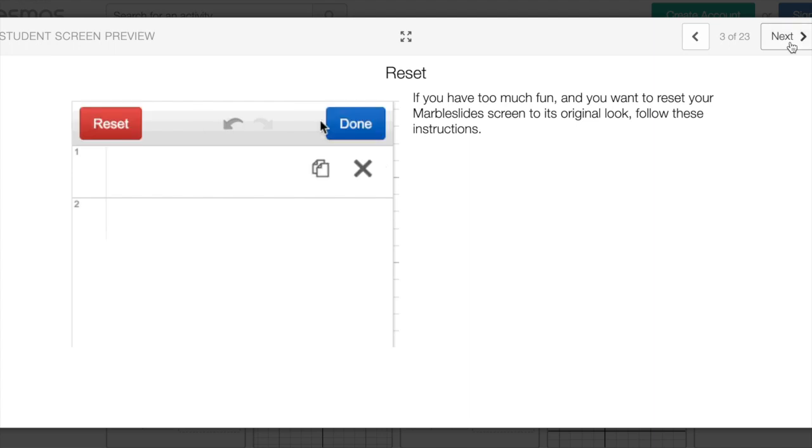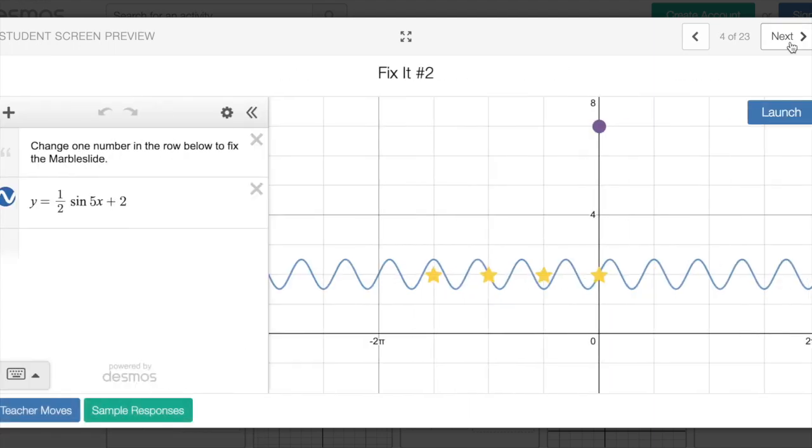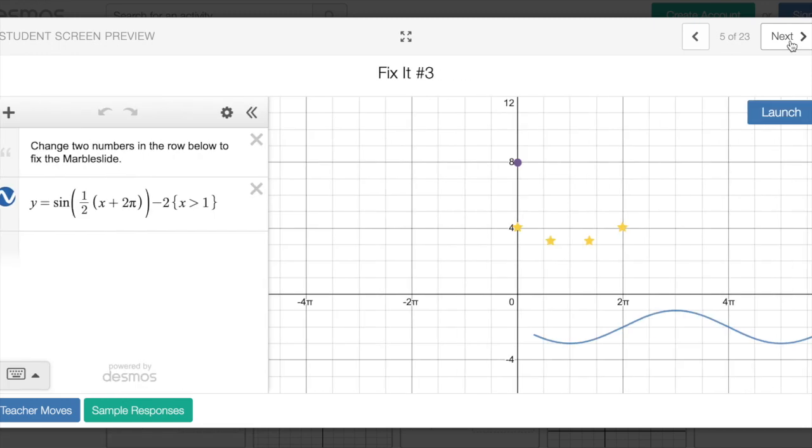Okay, that's the reset button. Change one number. Change two numbers for this one. Notice what this does. This in brackets here, x greater than one.